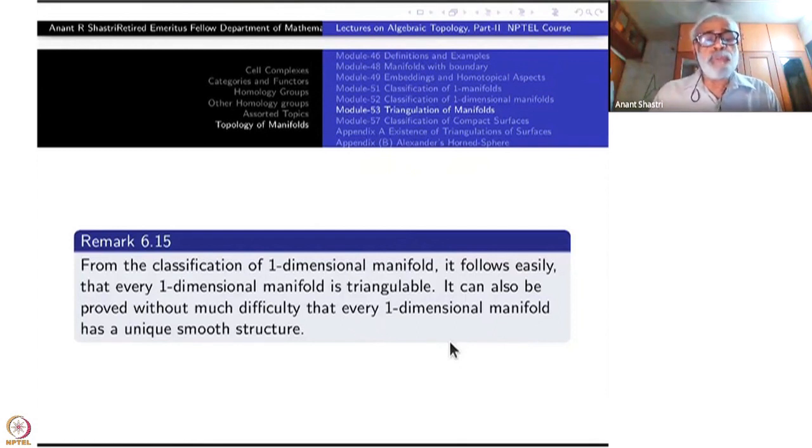It can also be proved that each one-dimensional manifold, two-dimensional manifold has a unique smooth structure. If you go through the proof of the classification, at some stages you will have to improve homeomorphism to diffeomorphism. So that requires a little more work, that's all.